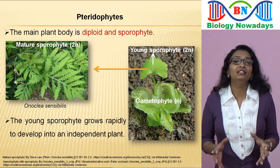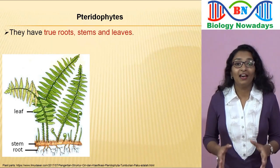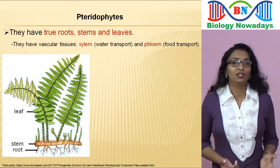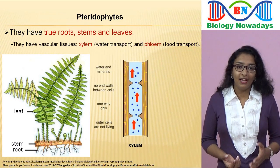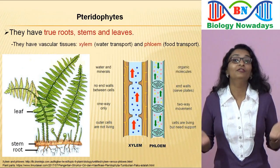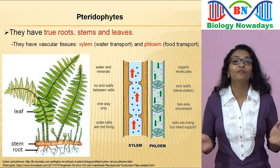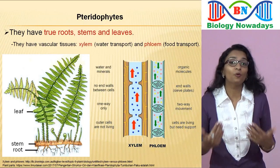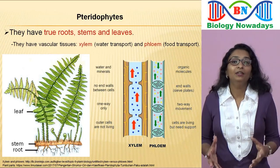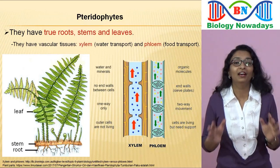Pteridophytes have well-developed true roots, stems and leaves, which means that they have vascular tissues called xylem and phloem. Xylem is specialized in transporting water and nutrients from roots to other plant parts, while phloem is specialized in transporting food — carbohydrates produced through photosynthesis — from leaves to the growing as well as storage tissues of the plant body.